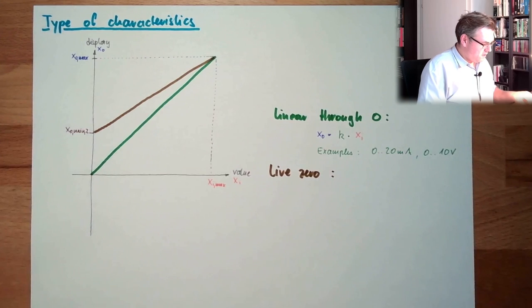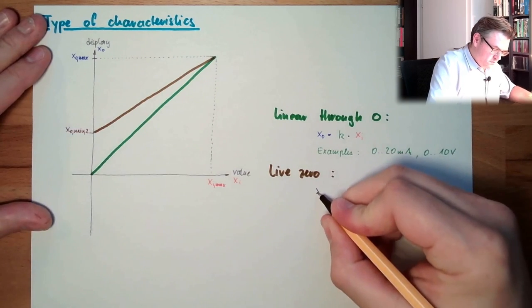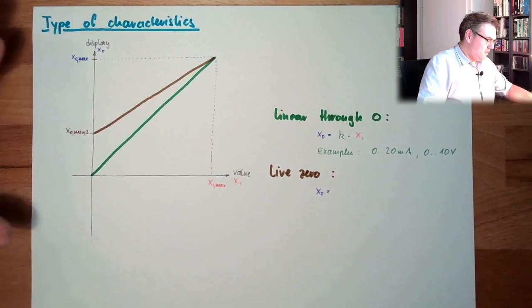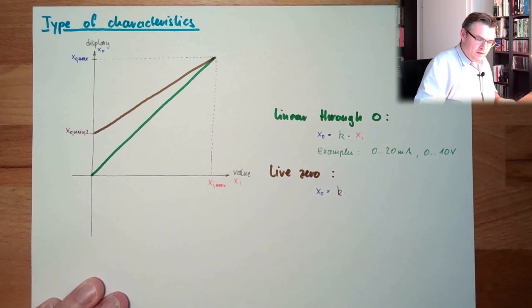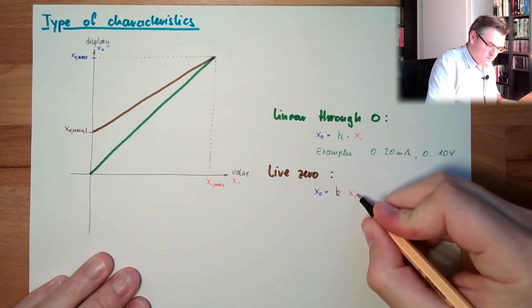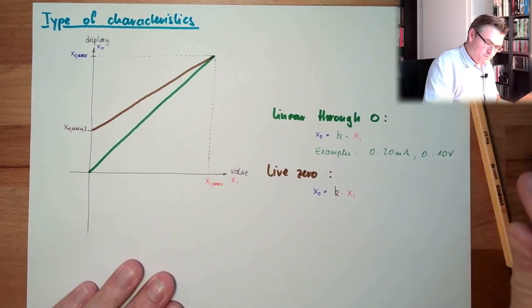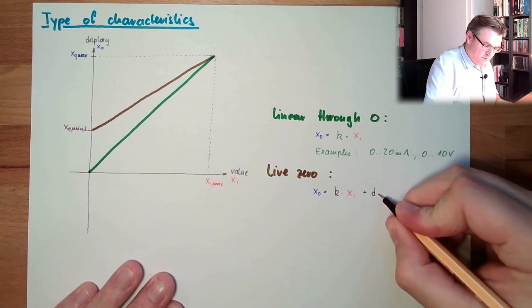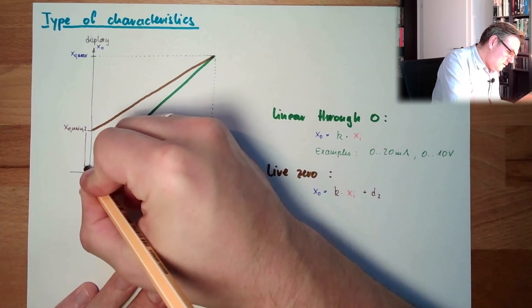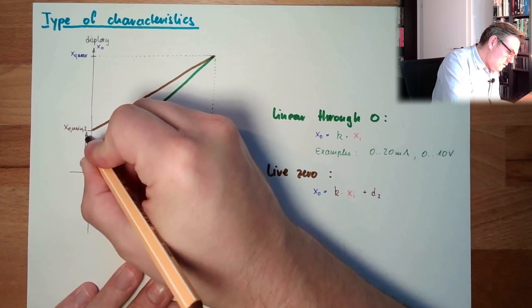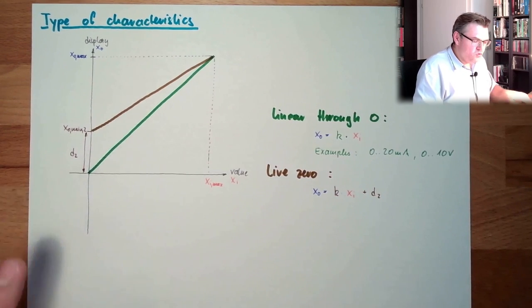Linear life zero. The equation XO equals, then we also have a K, multiplied by Xi. However, we do have an offset plus, I will call it D2, because it's the second line. So this is D2, XO min 2, it's the same.